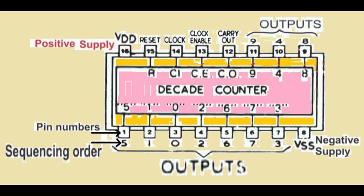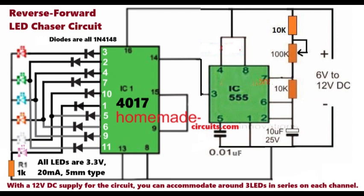Let us now examine the operation of the circuit. In the illustrated reverse forward LED light chaser circuit, the IC4017 is configured in its standard sequencing or chasing mode. However, the innovative incorporation of diodes at the IC's outputs creates the illusion of a reversing and forwarding sequence from beginning to end and vice versa. The strategic placement of the diodes allows the output sequence of the IC to control the LEDs in such a manner that the corresponding LEDs can replicate a back-and-forth chasing pattern.